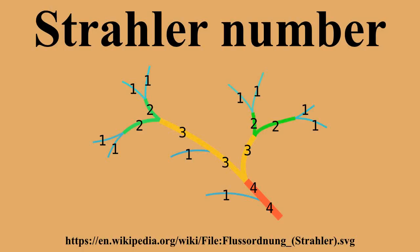The Strahler number of a tree is the number of its root node. Algorithmically, these numbers may be assigned by performing a depth-first search and assigning each node's number in post-order.